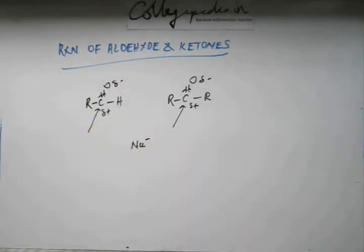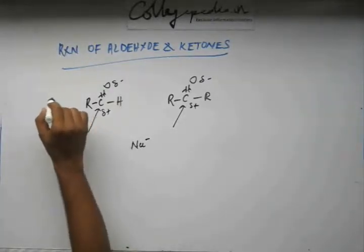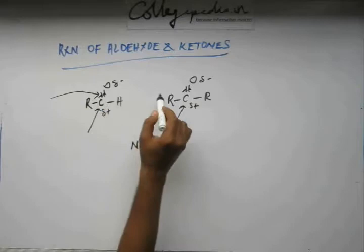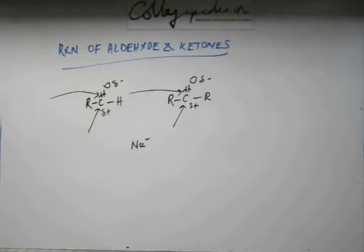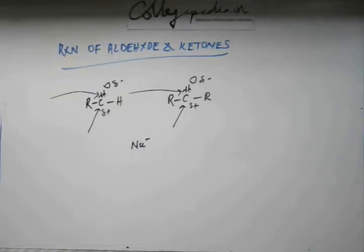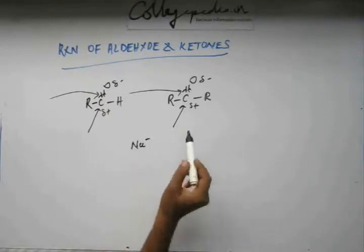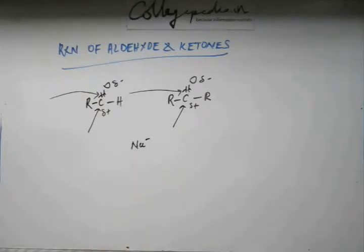This carbon is electron deficient, which makes it a reactive site. Another reason is that both the carbonyl groups in ketone and aldehyde have a pi bond. The pi bond has loosely held electron density, which can be offered to someone in need of electrons. Because of both the pi bond and electron deficiency, C=O is a reactive site.